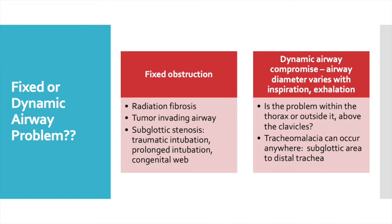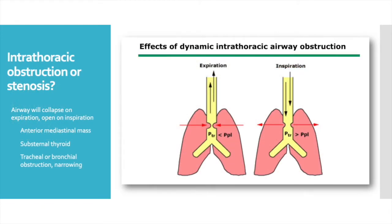Interestingly, a congenital web can get worse and become symptomatic for the first time during pregnancy. Dynamic airway compromise refers to a situation where the degree of airway collapse changes with each breath. We have to determine if the problem lies within the thorax or outside it, above the level of the clavicles. Tracheal malacia — weakening of the tracheal cartilage rings — can occur anywhere from the subglottic area to the distal trachea. Intrathoracic obstruction causes the airway to collapse on expiration and open more with inspiration. After lung transplant, you may see a combination of fixed and dynamic obstruction where stenosis from granulation tissue at the anastomosis is relatively fixed, but the tracheal or bronchial rings are also prone to collapse.